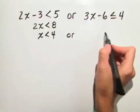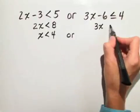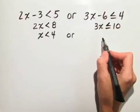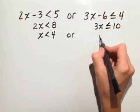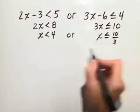Or, let's solve the second inequality by adding 6 to both sides. We have 3x is less than or equal to 10. We divide 3 on both sides, and we have x is less than or equal to 10 thirds.